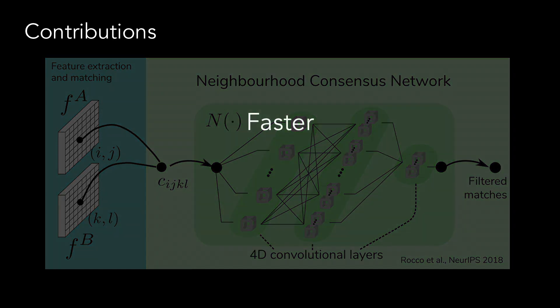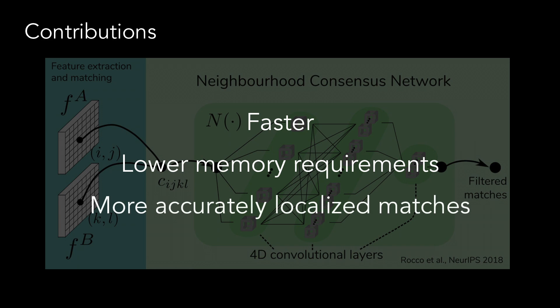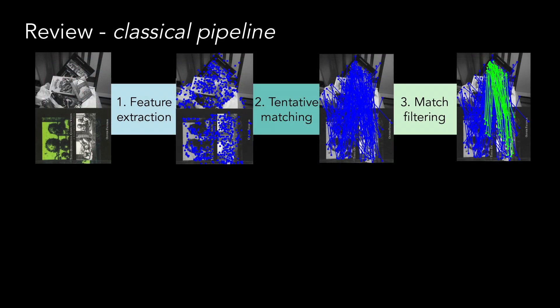In particular, we propose improvements that enable faster processing, lower the memory requirements, and allow to obtain more accurately localized correspondences. But before we delve into the details, let's review the classical matching pipeline which serves as inspiration for our work.